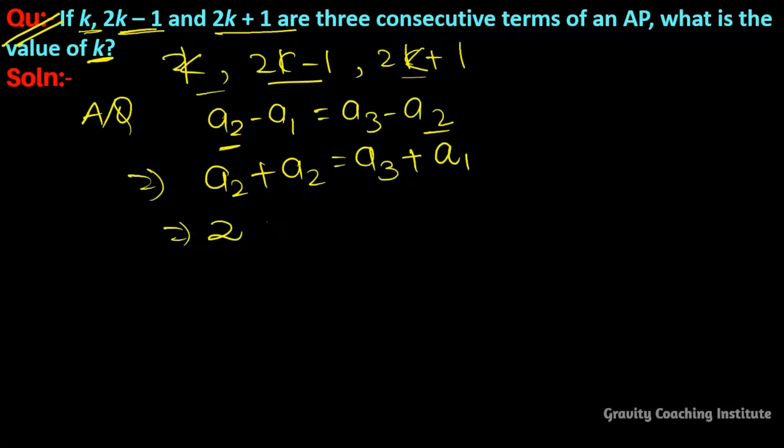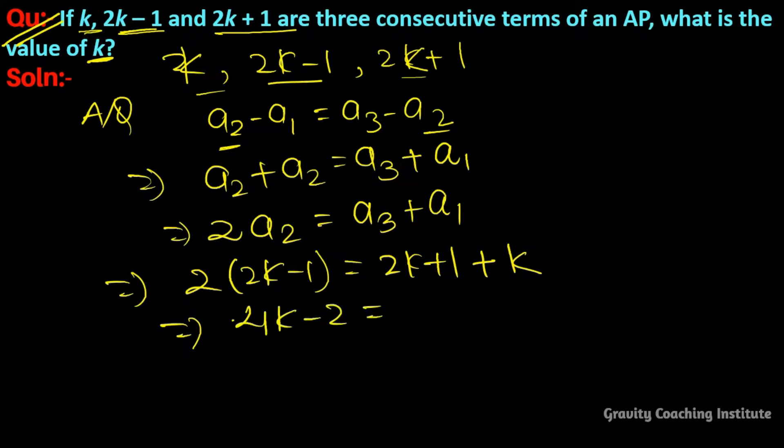So 2 into the second term, we put 2k minus 1 equal to a3, which is 2k plus 1, and a1 is k. So 4k minus 2 equals 3k plus 1, which implies that 4k minus 3k equals 1 plus 2. So k equals 3. Answer.